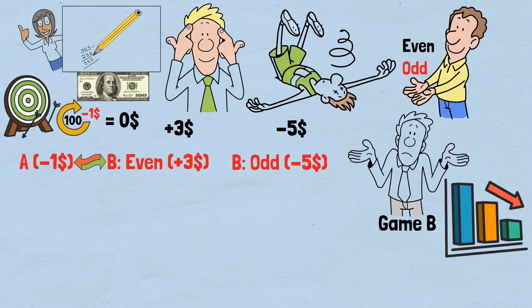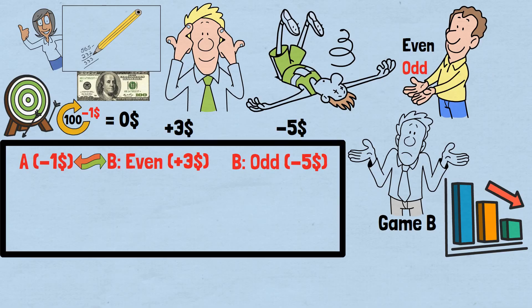One: start with $100, even number. Two: play Game A, lose $1, now have $99, odd number. Three: don't play Game B with an odd amount—that would cost you $5. Four: play Game A again, lose $1, now have $98, even number. Five: play Game B, win $3, now have $101, odd number.